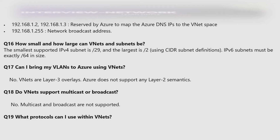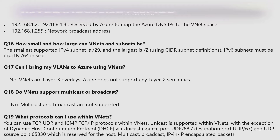What protocols can I use within VNets? You can use TCP, UDP, and ICMP TCP/IP protocols within VNets. Unicast is supported within VNets with the exception of DHCP via Unicast — source port UDP 68, destination UDP port 67, and UDP source port 65330, which is reserved for the host. Multicast, broadcast, and IP-in-IP encapsulated packets are not supported.